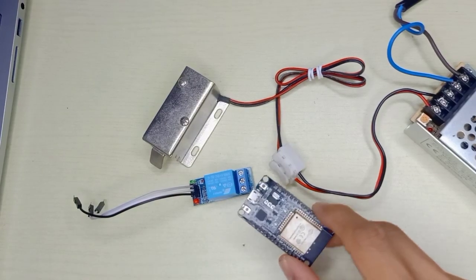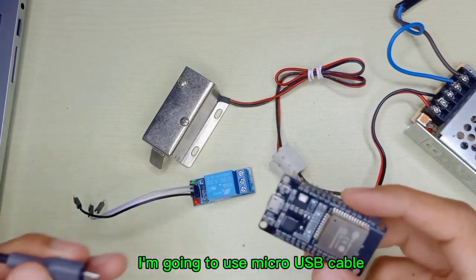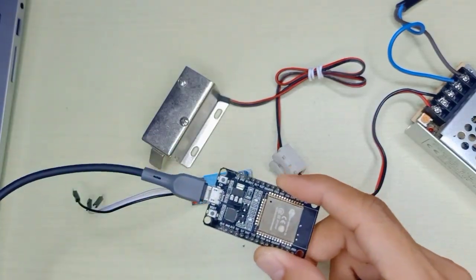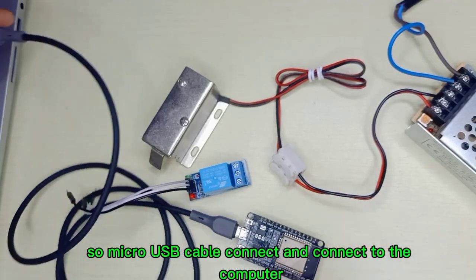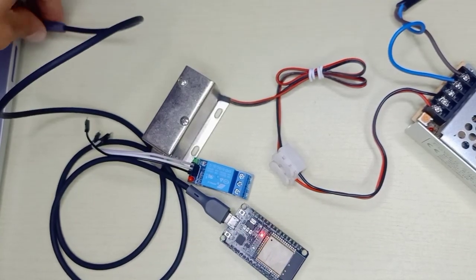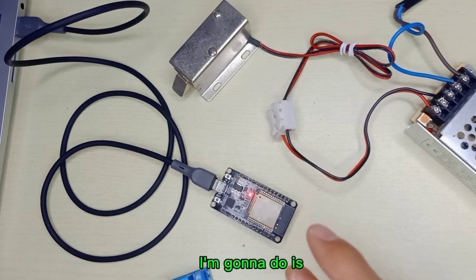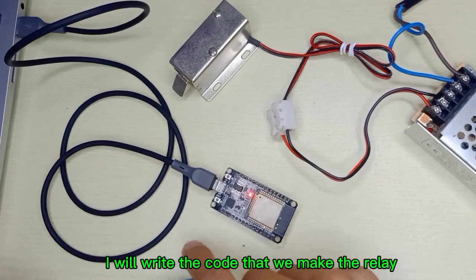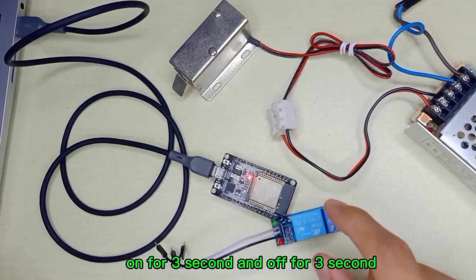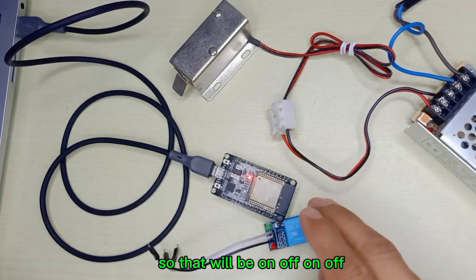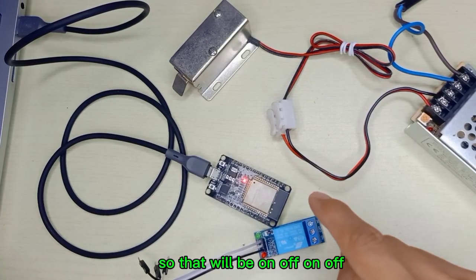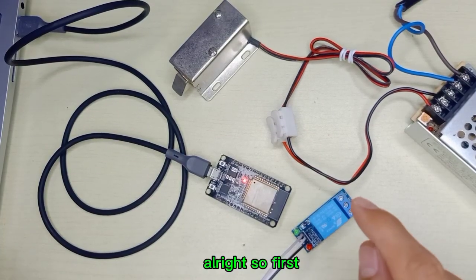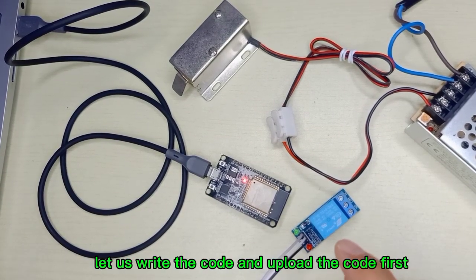First I'm going to use a micro USB cable to connect to the computer. What I'm going to do is write the code to make the relay on for three seconds and off for three seconds, so that will be on-off, on-off. Through the relay we control the solenoid. Let's write the code and upload it first.